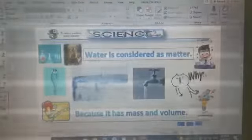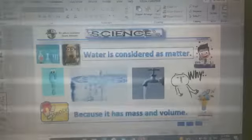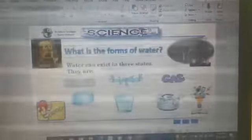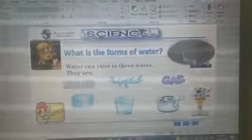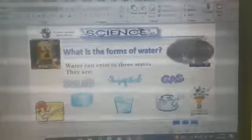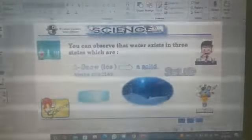We have different states of water. But first, is water considered matter? Yes, because it has mass and volume. What are the forms or states of water? Solid, liquid, gas. Solid like ice or snow, liquid like water, and gas like clouds or water vapor.